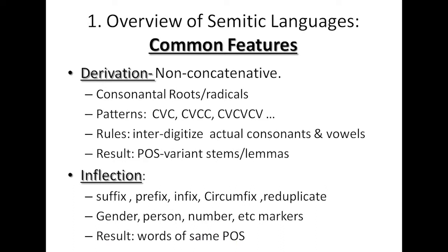When it comes to morphology, these languages involve both derivation and inflection, which is non-concatenative and very complex. Regarding derivation, these languages make use of roots and consonants, sometimes referred to as radicals. They use a conjugation of consonants and vowels as patterns governed by rules to perform derivation of surface forms from roots. Inflection involves suffixation, prefixation, circumfixing, and reduplication, which is more complex compared to Indo-European languages, marking gender, person, number, and so on.